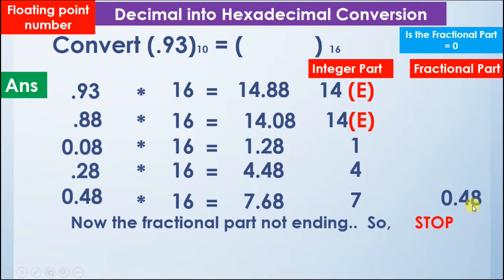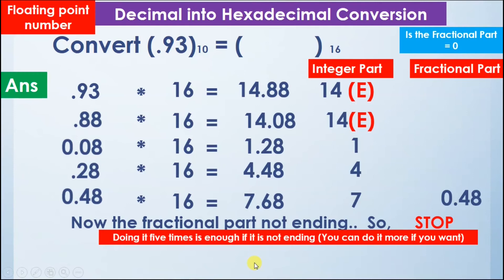We can see that the fractional part is not equal to 0 and it is not ending, so we will stop the procedure. We stop in two cases: if the fractional part reaches 0, or if after 5 multiplications it still hasn't reached 0. Doing it 5 times is enough, though you can do more if you wish.